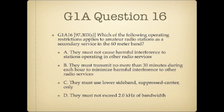Question 16. Which of the following operating restrictions applies to amateur radio stations as a secondary service in the 60 meter band? A. They must not cause harmful interference to stations operating in other radio services. B. They must transmit no more than 30 minutes during each hour to minimize harmful interference to other radio services. C. They must use lower sideband suppressed carrier only. Or D. They must not exceed 2.0 kHz of bandwidth.